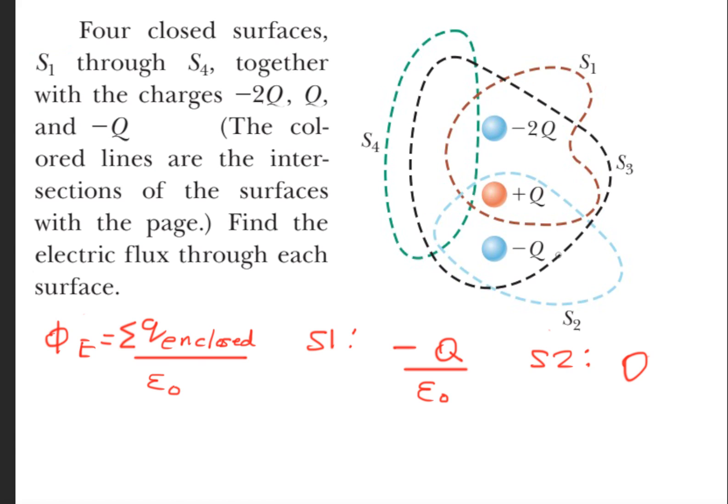For the third surface, we have three charges: minus 2Q, plus Q, and another minus Q. So we have these three charges in here.